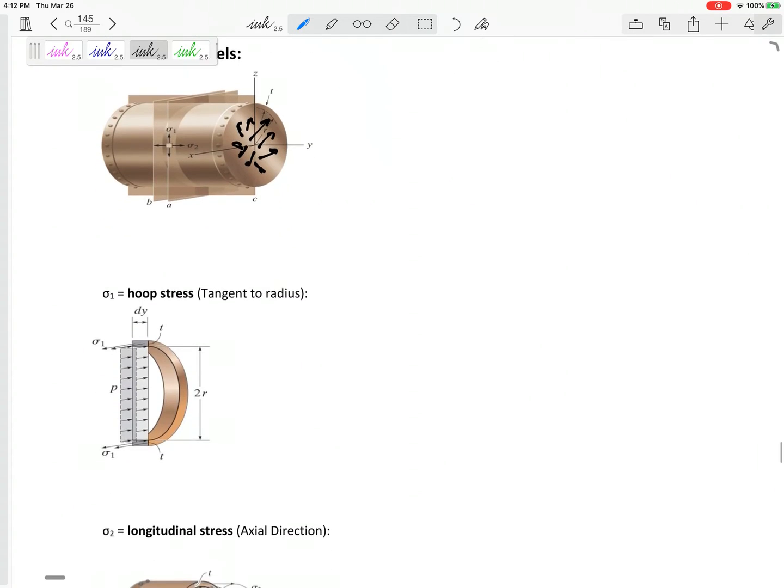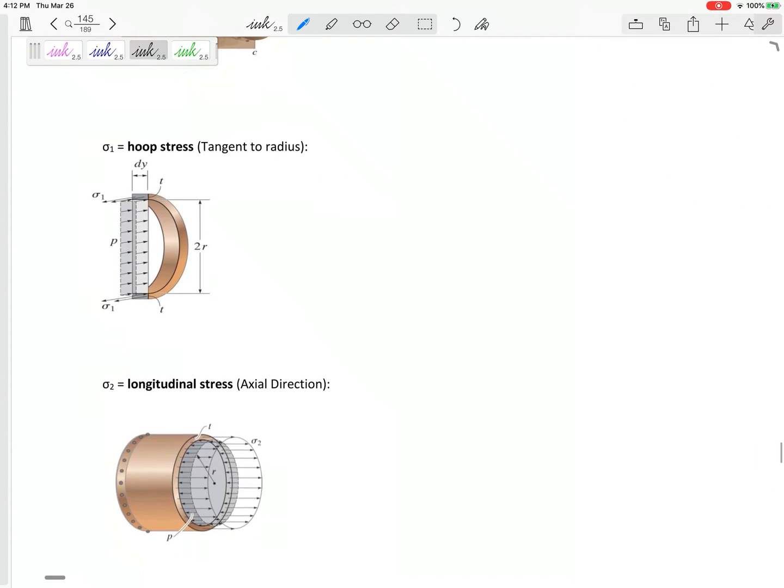And for thin-wall pressure vessels, just real quickly, it'll cause two types of stresses, two tensions in the wall. For a cylinder we've got hoop stress that is tangent to the radius, right here this is the hoop stress, and we've got this longitudinal stress which is along the axial direction.